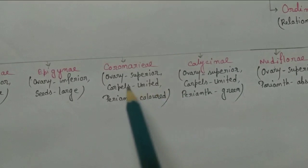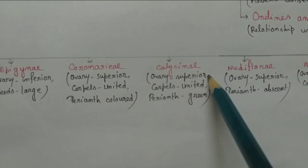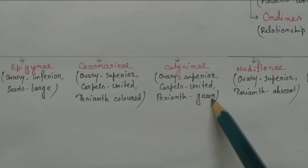Next, the Coronarieae, where ovary superior, carpels united, and perianth colorful. Next, the Calycinae, where the ovary is superior, carpels united, but perianth is green. So Coronarieae and Calycinae, the difference: in case of Coronarieae perianth is colorful, but in case of Calycinae perianth color is green.